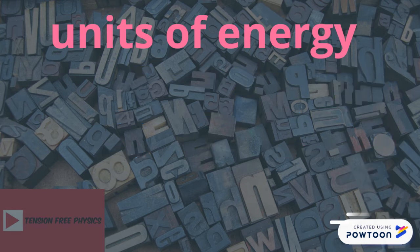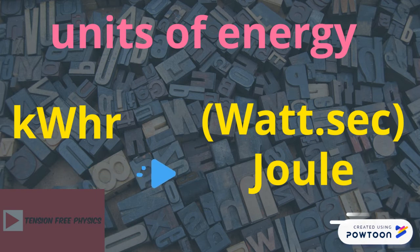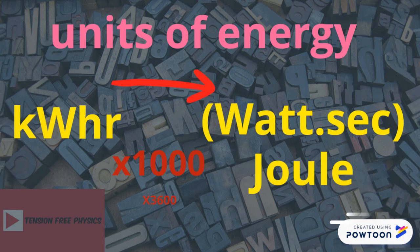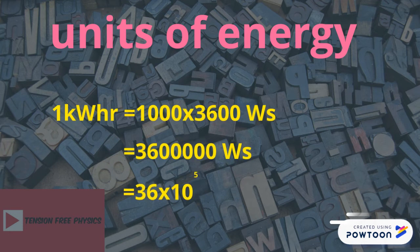If we want to convert from kilowatt-hour to joule, you multiply by 1000 as one kilowatt equals 1000 watts, and you multiply by 3600 because one hour equals 3600 seconds. In short, to convert from kilowatt-hour to joule, multiply by 3.6 × 10⁶, and vice versa.